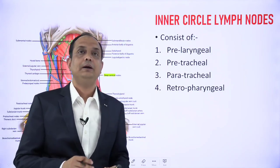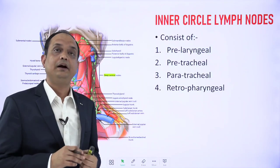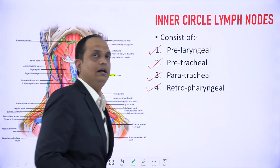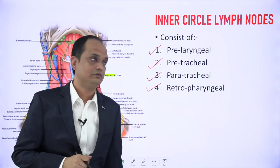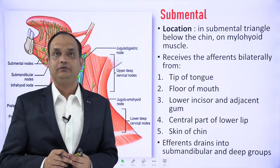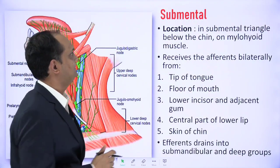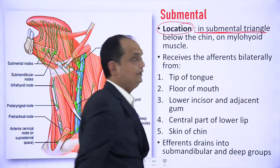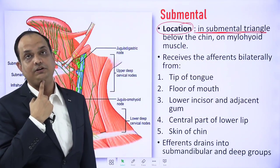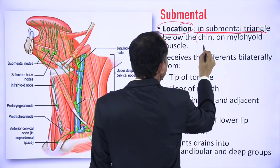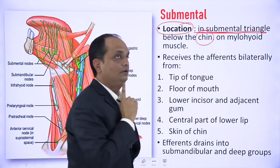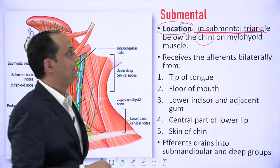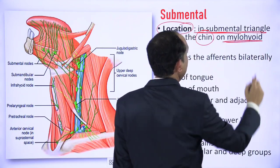The inner circle nodes are present around the upper part of the respiratory and alimentary system and are known as pre-laryngeal, pre-tracheal, paratracheal, and retropharyngeal groups. The submental group of lymph nodes — as the name suggests — is located in the submental triangle, just below the chin, and lies on the outer surface of the mylohyoid muscle.